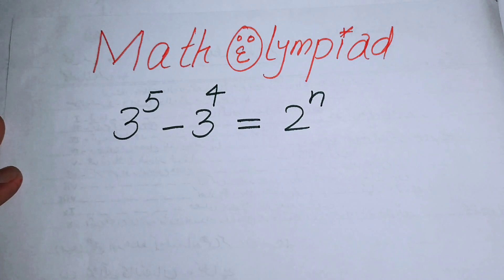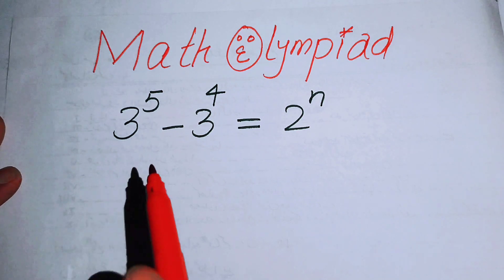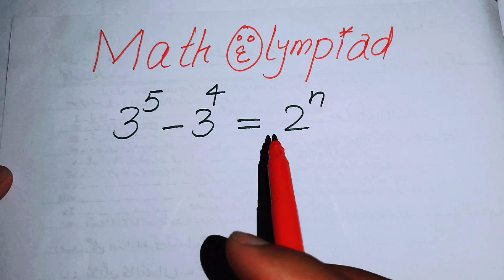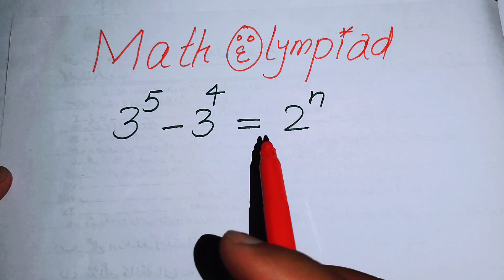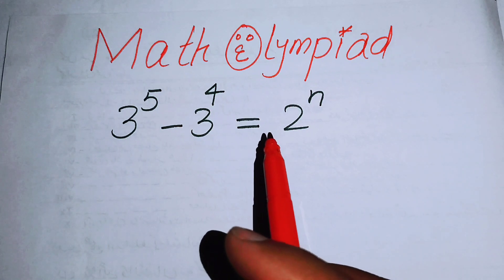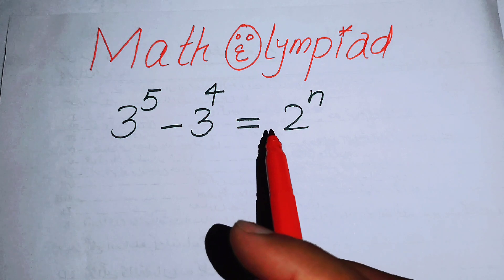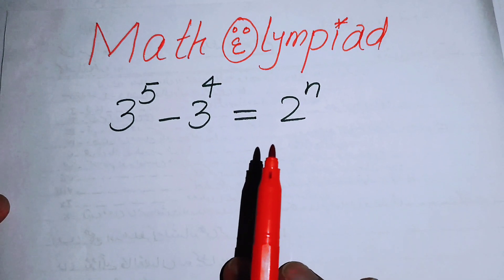Hello everyone, welcome back to the Map of Mathematics. In this video we are going to solve this nice algebra problem: 3 to the power of 5 minus 3 to the power of 4 is equal to 2 to the power of n. We will solve this problem for the value of n, and at the end we will check the answer.